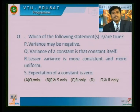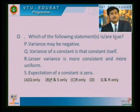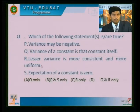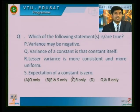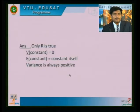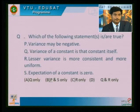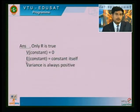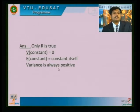Which of the following statement is true? (P) variance may be negative; (Q) variance of a constant is the constant itself; (R) lesser variance is more consistent and more uniform; (S) expectation of a constant is 0. Here only R is true — lesser variance is more consistent and more uniform. Because variance is always positive, P is false. Variance of a constant is 0, not the constant itself, so Q is false. Expectation of a constant is the constant itself, so S is false.